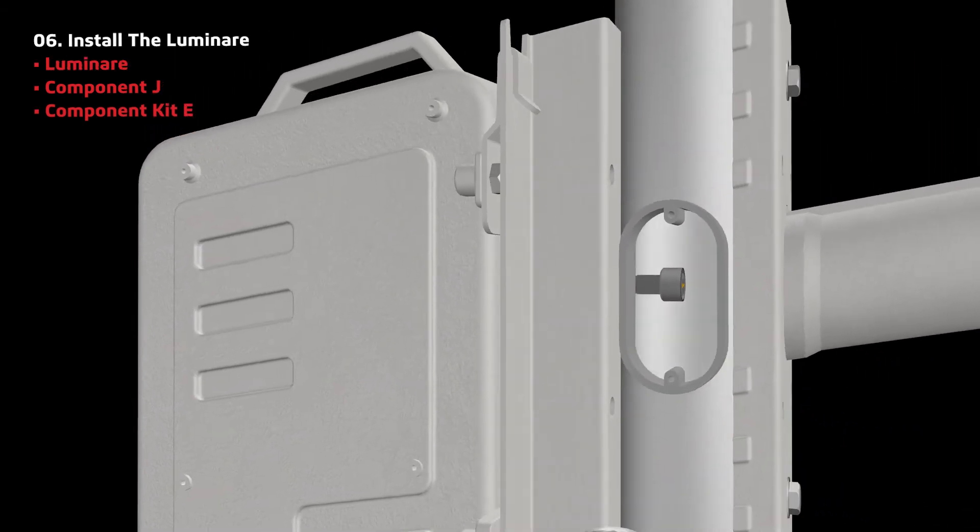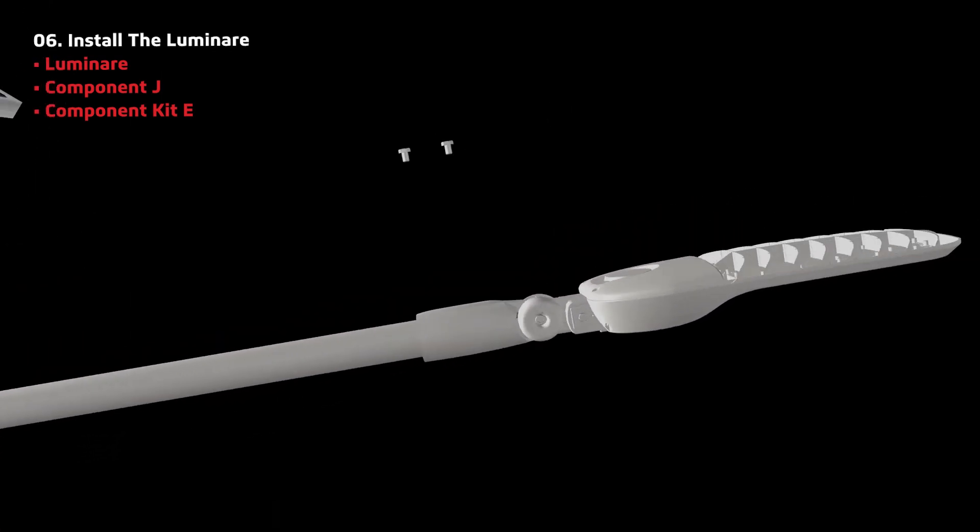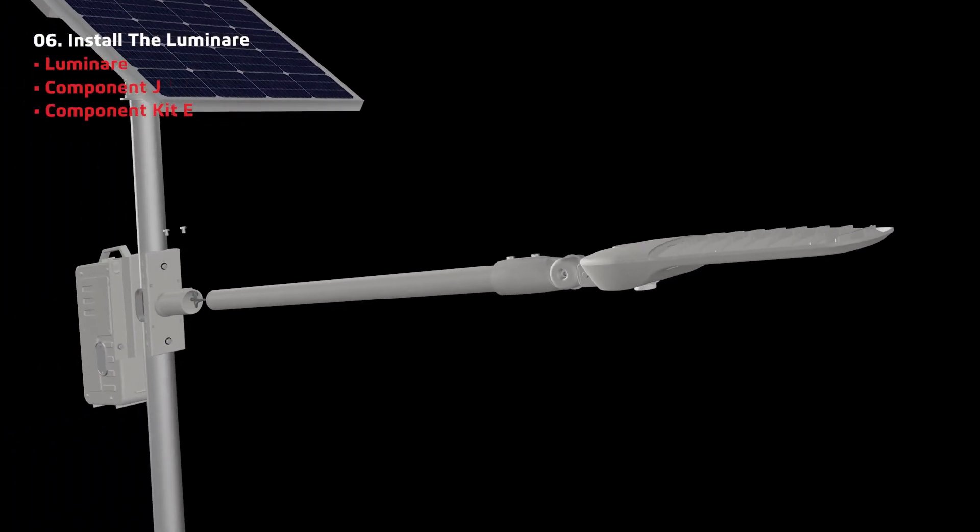Now install the luminaire. Feed the wire of the luminaire through component J, and then secure the luminaire with screws from component kit E to component H.